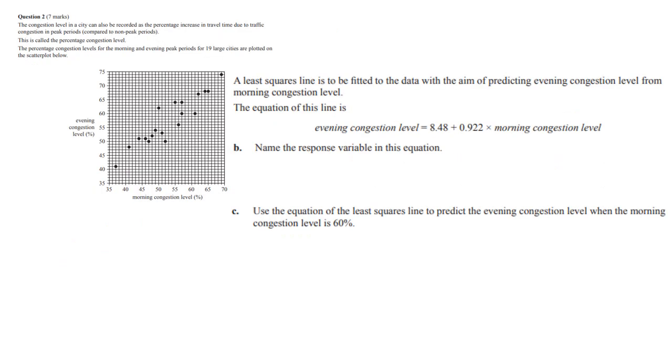Okay, here it says name the response variable in this equation. There are a few ways to look at this. You've got the x and y axis are now called explanatory and response. So remember x for explanatory. You might also know that they love to have the equation in the form y equals a plus bx. So you can still see again which one is the response, is the y. So we know it is actually the evening congestion level.